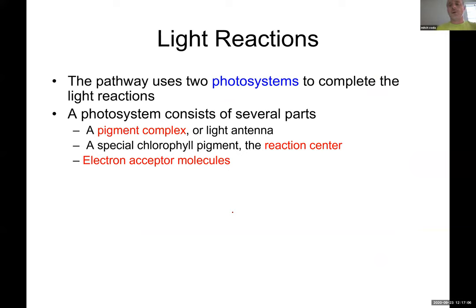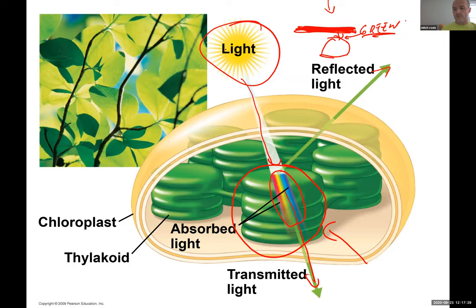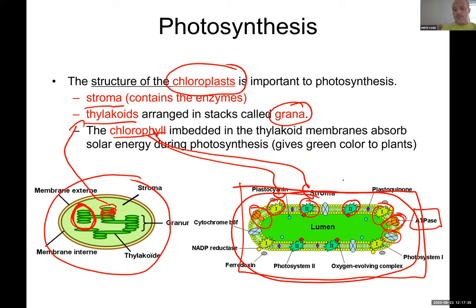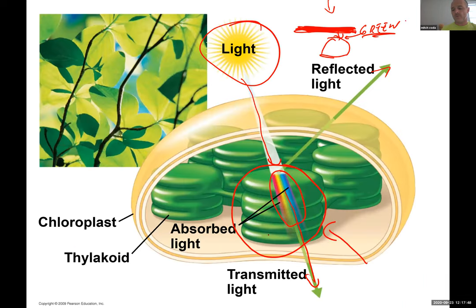Back to photosynthesis. Light reaction requires light — sun or a lamp. For light reaction to happen, there are two photosystems in the thylakoid membrane. There is photosystem 1 and photosystem 2. For light reaction, there is a requirement for both photosystems.